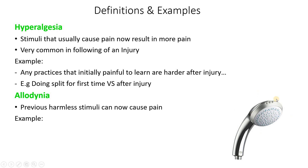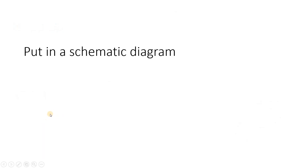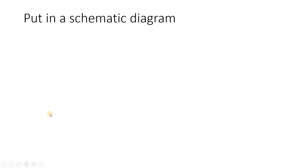A good example is taking a shower when you are sunburned. When you are sunburned, you would find that hot water can cause you pain. This is not the case when you don't have sunburned skin, but once you have it, the previously harmless stimuli — hot water — can now cause you pain. That's why it is called 'previously harmless stimuli.'